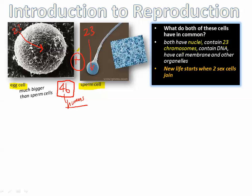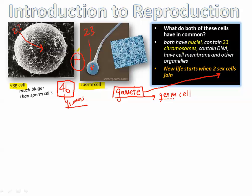New life starts when two sex cells join. Each of these is called a sex cell — this is an egg cell, this is a sperm cell. Another fancy word for sex cell is gamete. Gamete is a fancy word for sex cell. Another fancy word is germ cell. When we say germ cell, we're not talking about germs or bacteria — we're talking about gametes or sex cells.